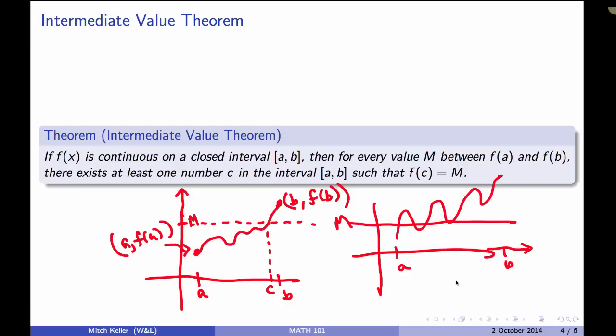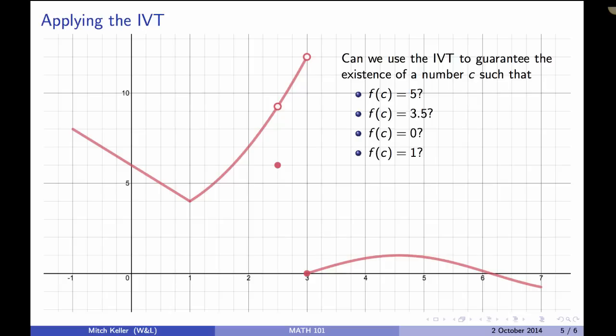And actually proving this theorem, which we won't do, was a real achievement that took a deep understanding of what it meant for a function to be continuous on a closed interval and what the real numbers even are, and it relies on a property called the completeness of the real numbers.